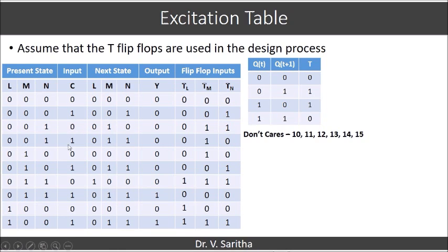The 10 combinations considered are: 0, 1, 2, 3, 4, 5, 6, 7, 8, and 9. The rest of the cases — 10, 11, 12, 13, 14, 15 — will be the don't cares. So now in order to get the expressions for TL, TM, TN, and Y, we have to use these don't care conditions to get a more simplified form.